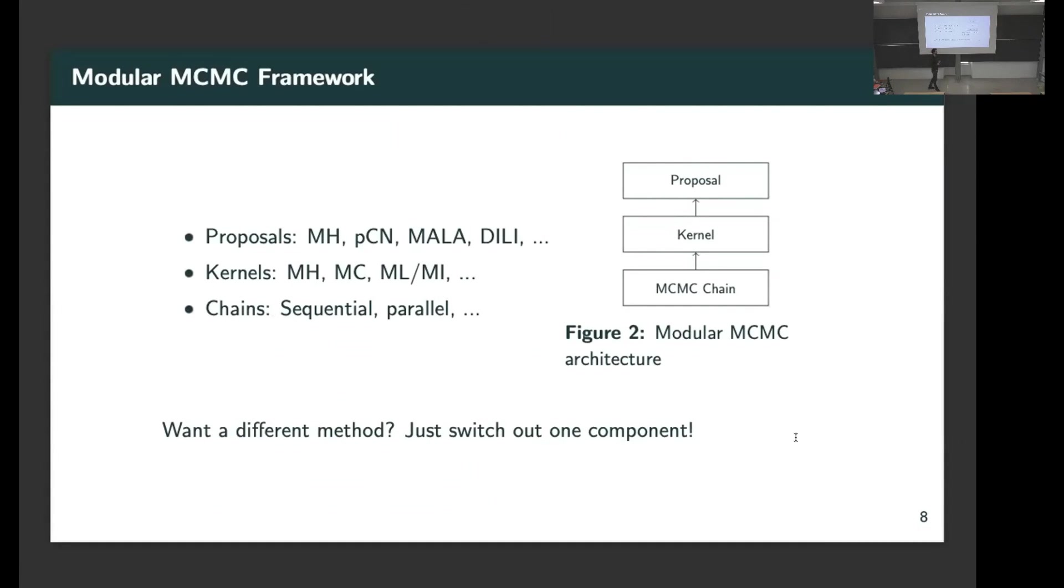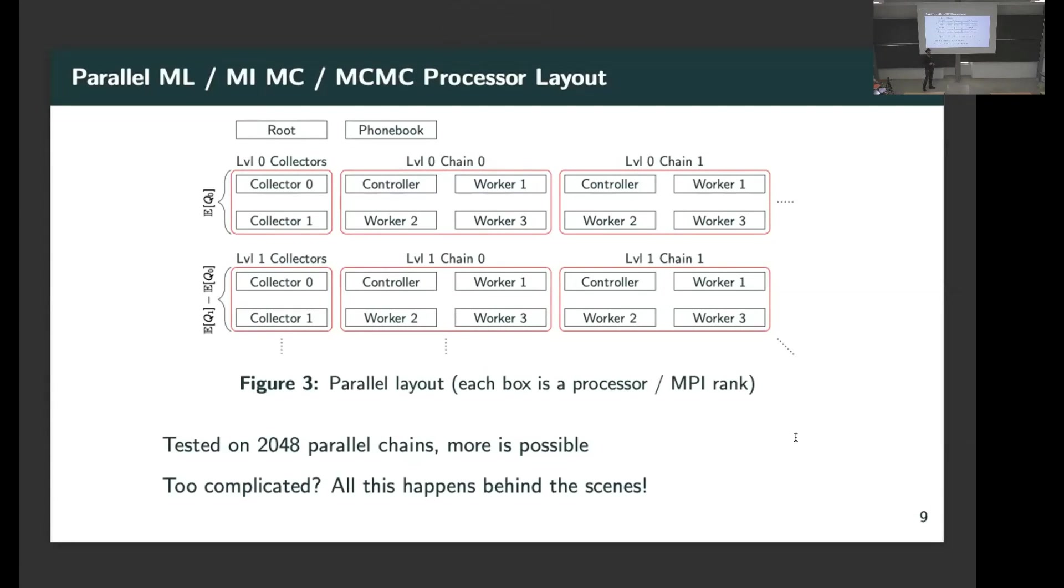UQ methods themselves are also built in a modular way in MUQ. For example, Markov chain Monte Carlo methods are always built in this triplet where the chain is driving the actual sampling, kind of does accept/reject and proposal does proposals. There's a lot of pre-existing implementations. You can construct pretty much any MCMC method you can think of. Based on this framework, as part of my PhD project, I implemented multilevel Markov chain Monte Carlo, specifically exploiting parallelization.